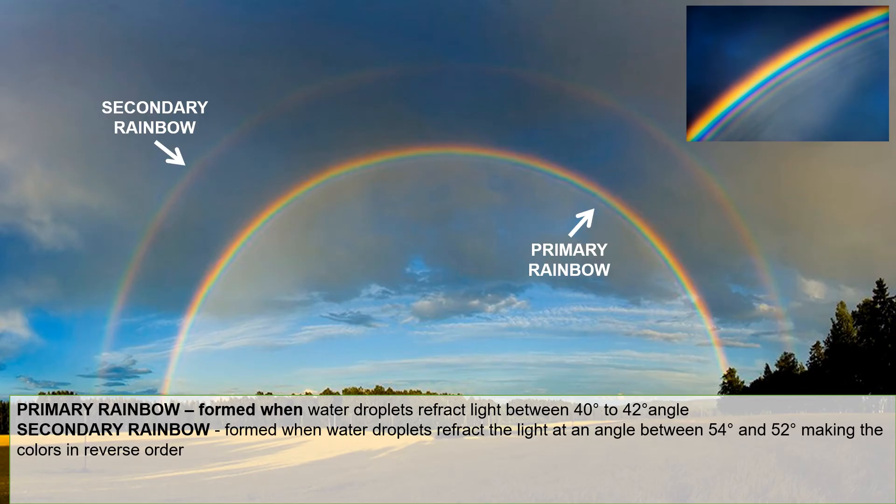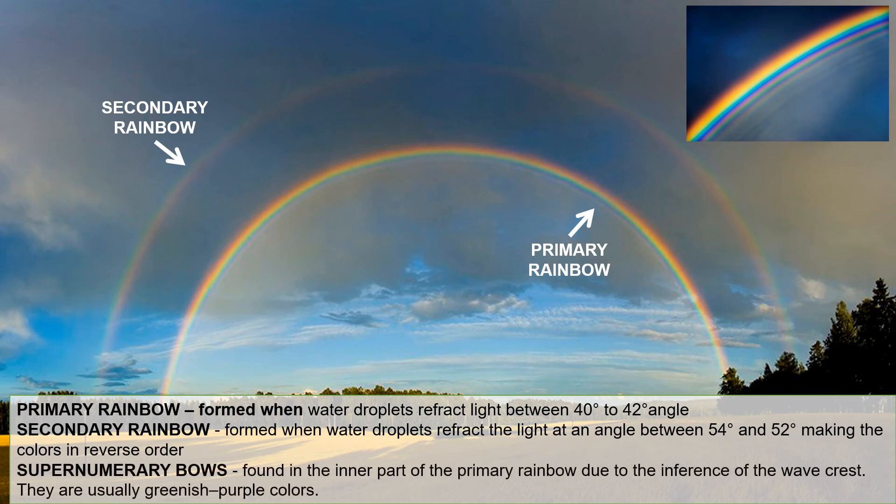Supernumerary bows are found in the inner part of the primary rainbow due to the interference of wave crests. To recap: the primary rainbow, the secondary rainbow, and the supernumerary bows.